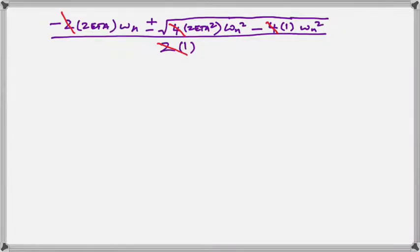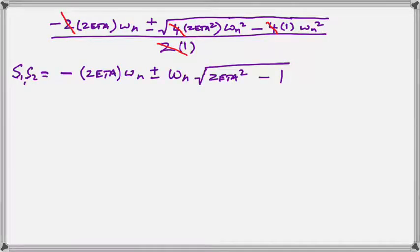Once we cancel out our terms, we can bring omega outside of the square root symbol and we are left with a very simple solution of our roots which depends only on zeta and omega n. It is a magnificent way to rewrite our original expression.